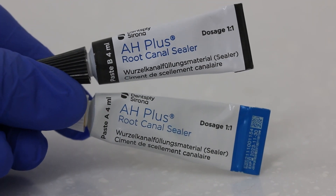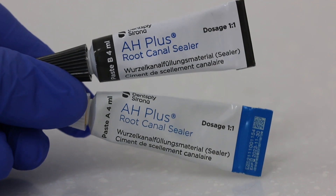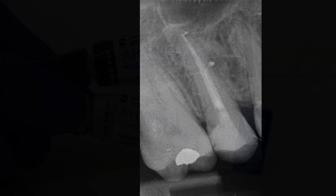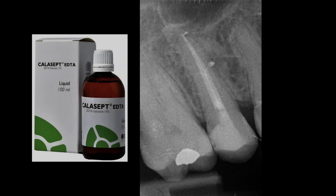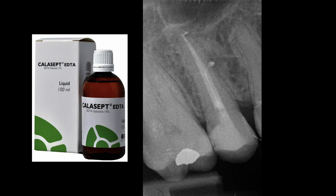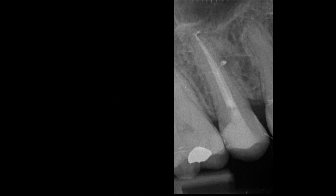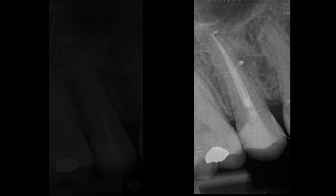I then used AH Plus onto the cones, fitted them to length, and used my Elements heated plugger to burn off the excess. What's significant about this obturation is where the EDTA has chelated and removed the smear layer on the inside of the canal, which has opened up the lateral anatomy. When I placed that cone to length — covered in AH Plus — it squeezed right into that lateral obturation.